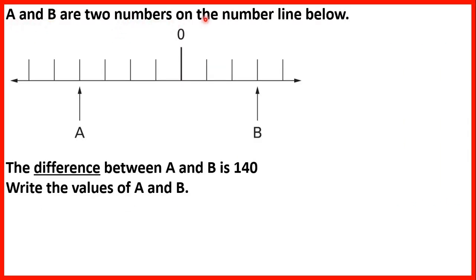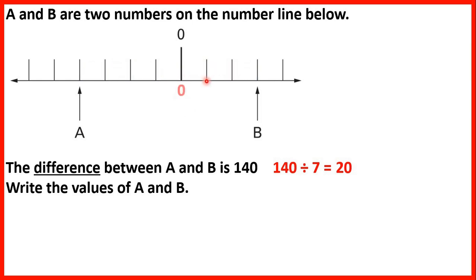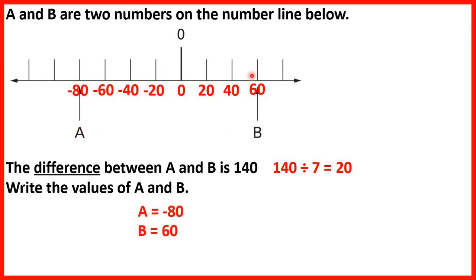A and B are two numbers on the number line below. The difference between A and B is 140. To get from A to B we have 7 lines, so we divide 140 by 7, which tells us each jump is a difference of 20. If this point is 0, counting up we have 20, 40, 60, and counting down we have minus 20, minus 40, minus 60, minus 80. So A is minus 80 and B is 60.